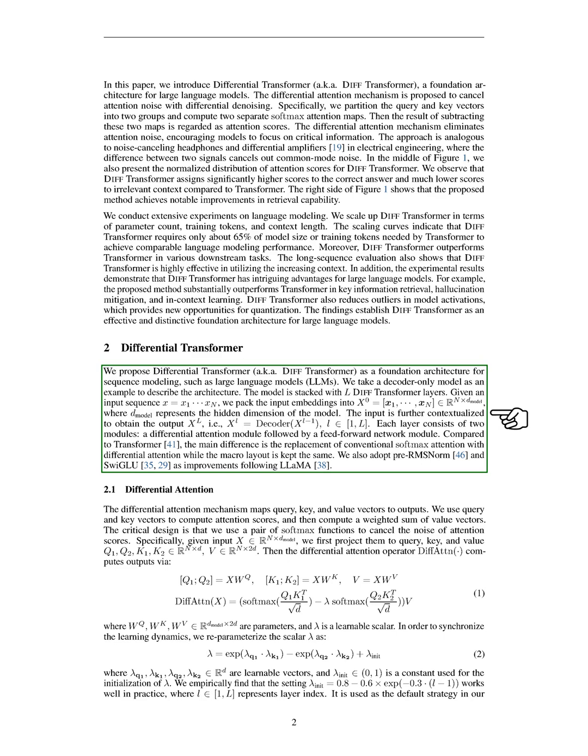We describe DIF transformer as a sequence modeling architecture, specifically for LLMs, using a decoder-only model as an example. The model consists of multiple DIF transformer layers. We pack the input sequence into embeddings and contextualize it to produce outputs through a series of layers. Each layer includes an attention module followed by a feed-forward network, with the key difference being our use of a modified attention mechanism to replace the conventional approach.